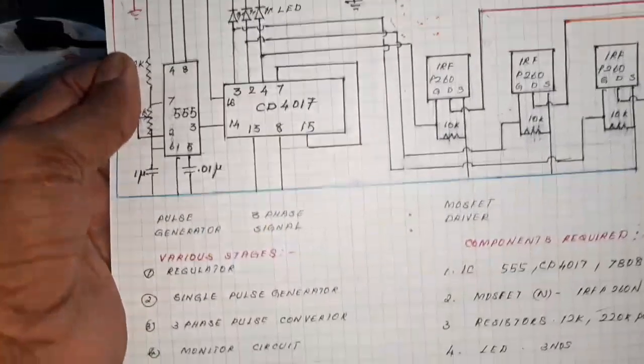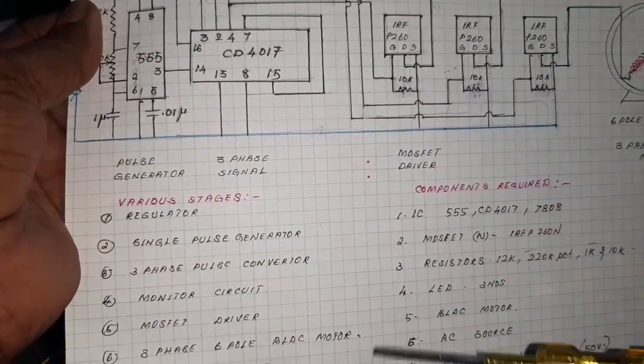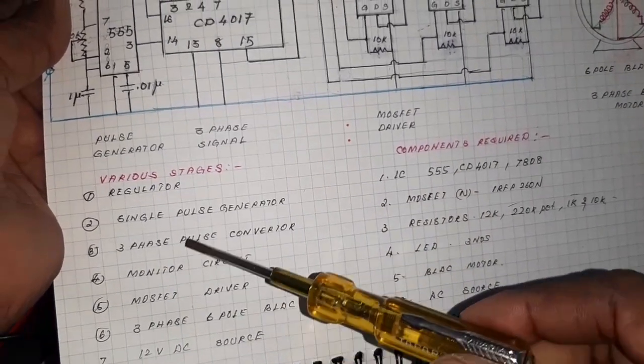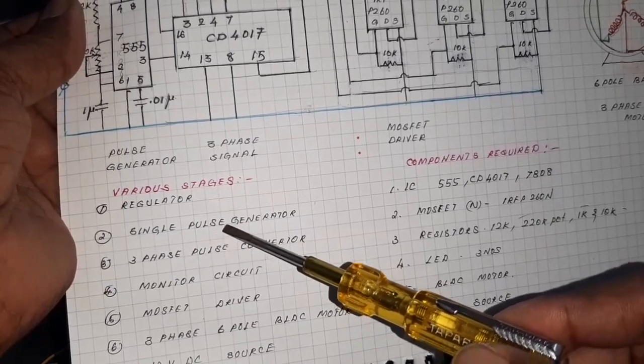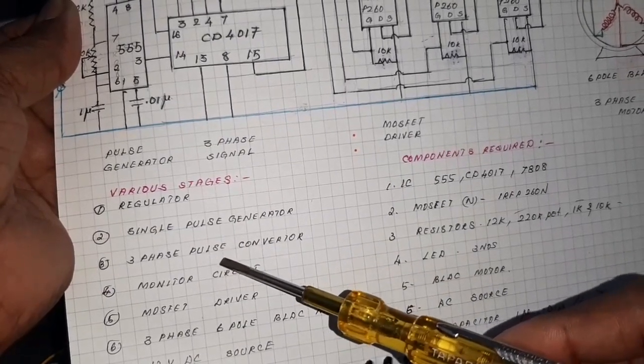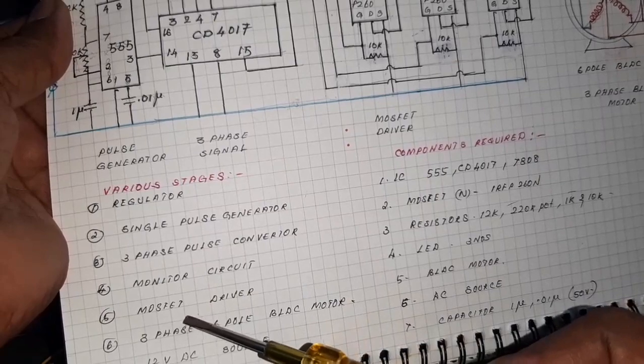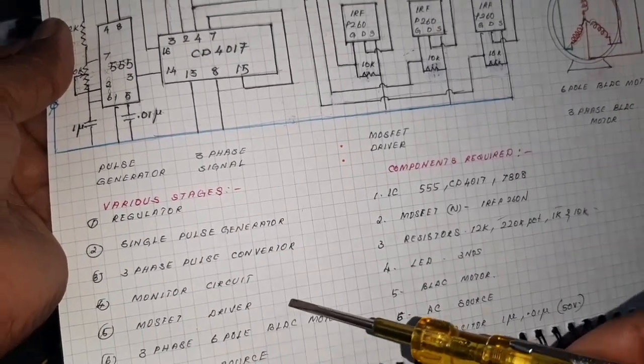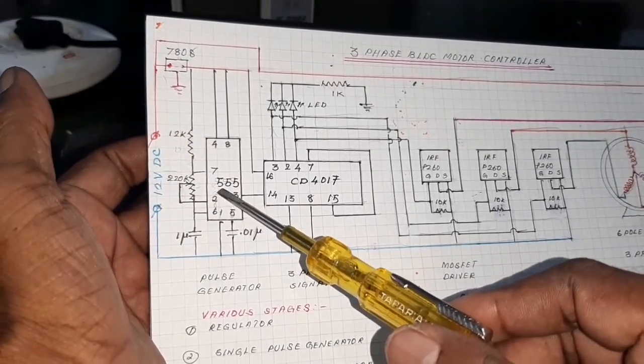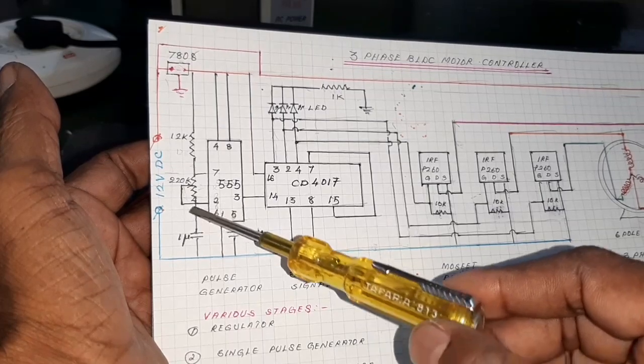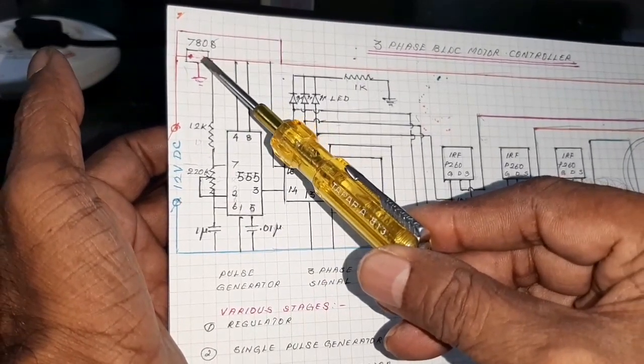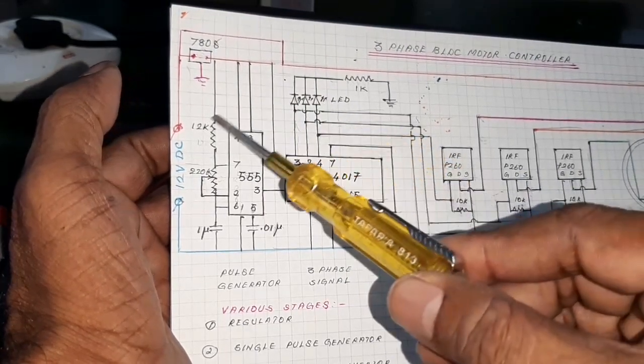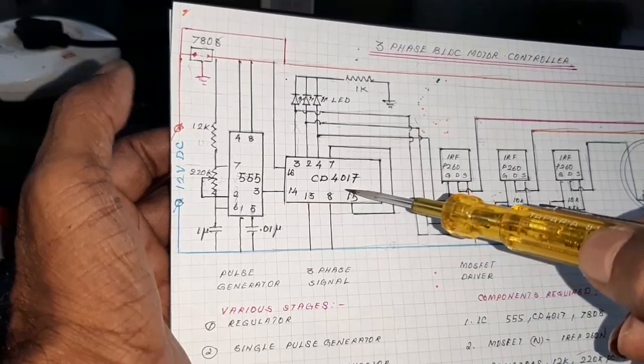Here it has five stages. Look at this: regulator stage, pulse generator, three-phase pulse converter, monitor circuit, MOSFET driver, and three-phase six-phase motor. Here look at this, this is the pulse generator using 555 timer. Here this is the regulator 7808 for using the regulator power supply for IC 555 and CD4017.